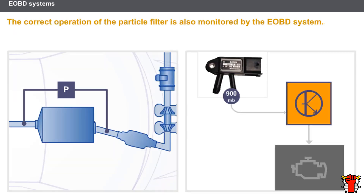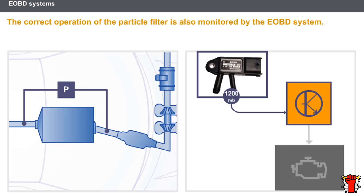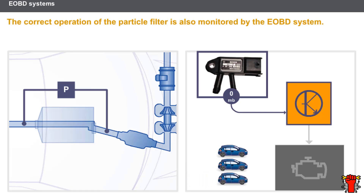The correct operation of the particle filter is also monitored by the EOBD system. The injection computer uses the differential pressure sensor. If the filter is clogged, the difference in pressure between the filter inlet and outlet increases. If the filter has a hole in it, or if there is no filter, the difference in pressure between the inlet and outlet is zero. If the fault is detected in three consecutive trips, the EOBD warning light is activated.